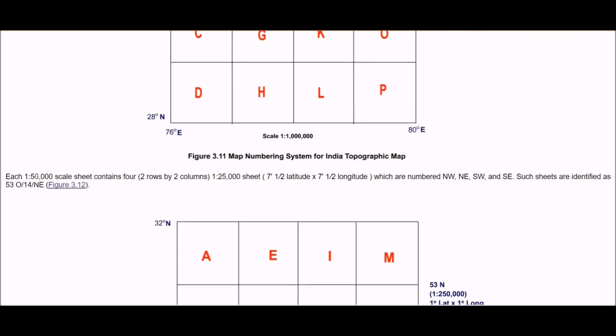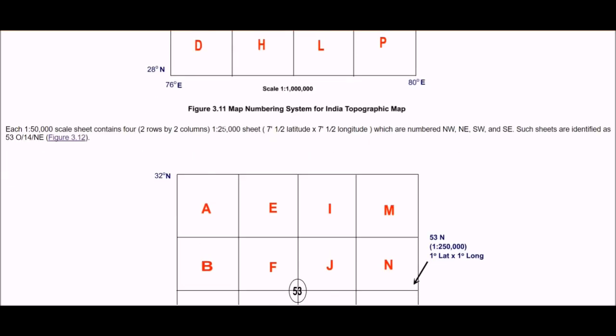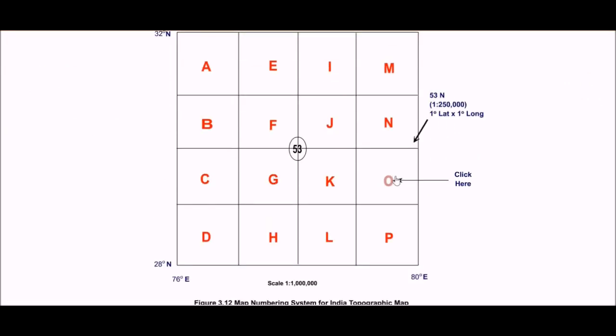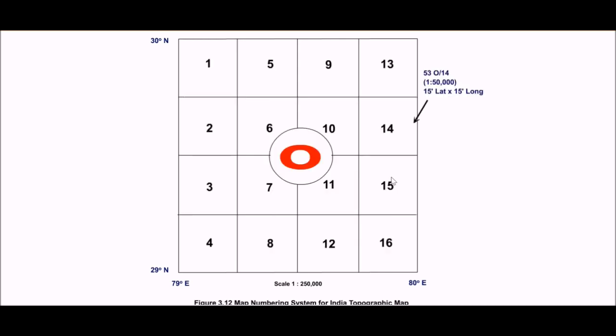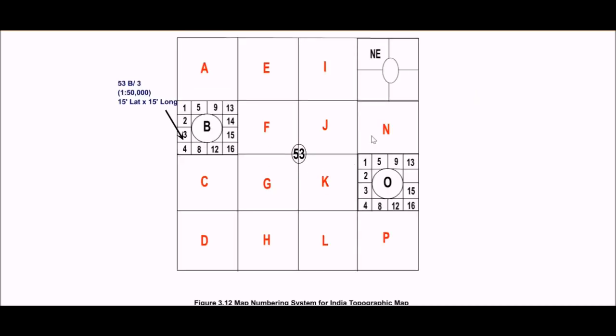Each 1 is to 50,000 scale sheet contains 4, 2 column by 2 column, that is 1 is to 25,000, that is 7.5 latitude and 7.5 longitude. These are minutes actually, not degree, which are numbered northwest, northeast, southwest and southeast. Such sheets are identified as 53/0/14. Let us click here and see, again 16 partitions and we come up to 1 is to 25,000.